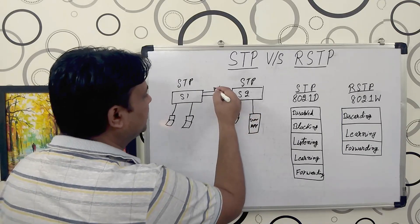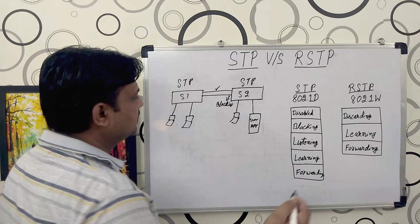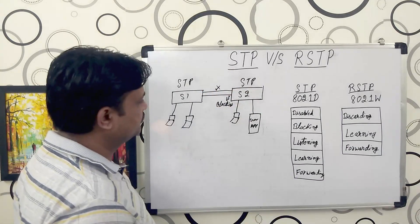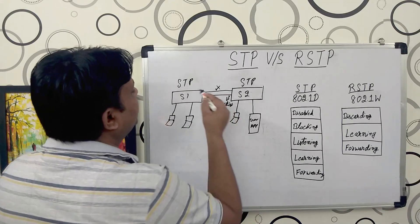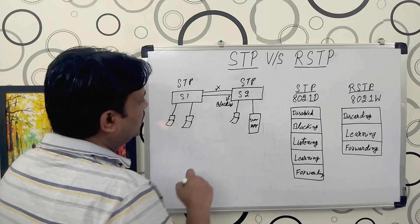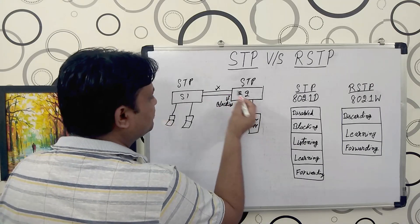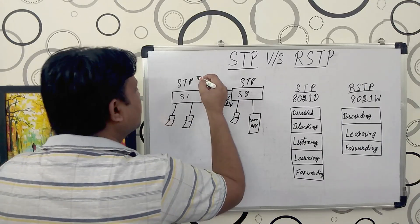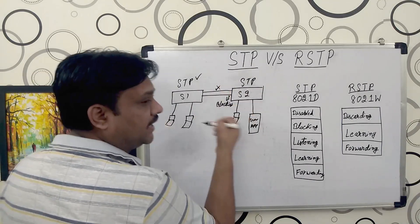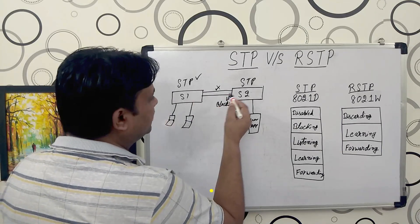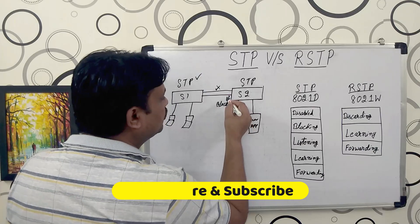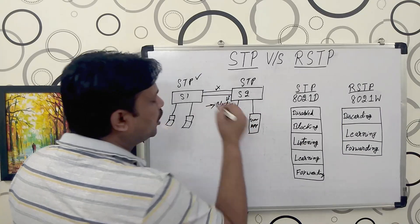Suppose this port is on blocking stage and data is transferring through the upper link. Now if the upper link has technical issues and is no longer able to transfer data, STP protocol will analyze why data has stopped transferring, and if it finds an issue, it will unblock the port that was in the blocking stage.